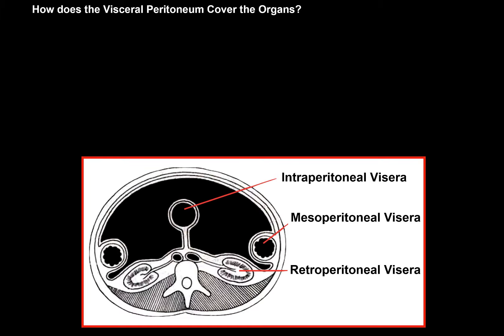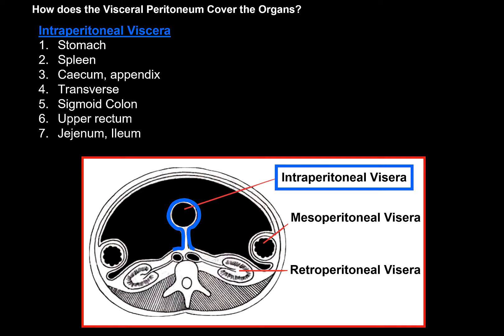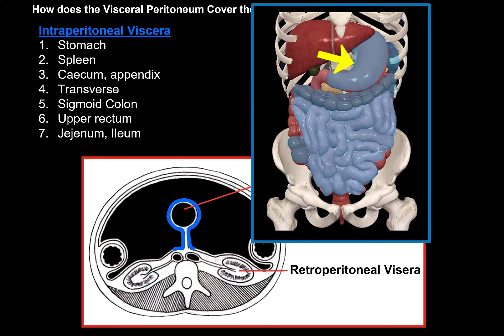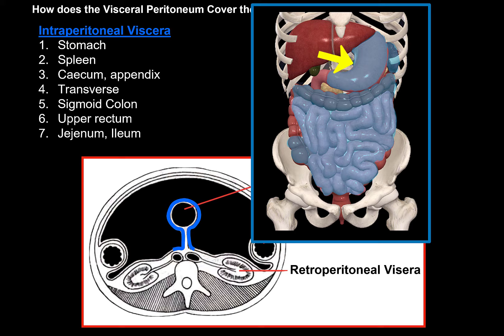Let's answer the question: how does the visceral peritoneum cover the organs? There are three ways, visualized in a transverse section of the abdominal cavity. The first type are the intraperitoneal viscera — organs completely invested by the visceral peritoneum. These include the stomach, the spleen, the cecum and appendix, the transverse colon, the sigmoid colon, the upper part of the rectum, and the jejunum and ileum of the small intestine. So the stomach, for example, is an intraperitoneal organ.